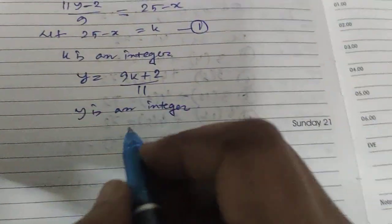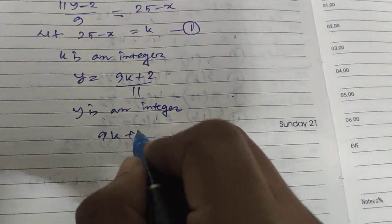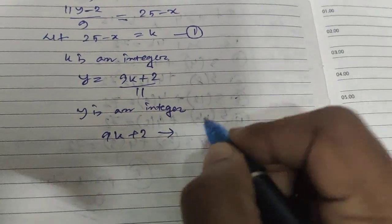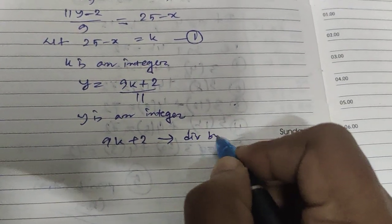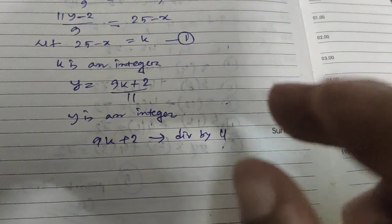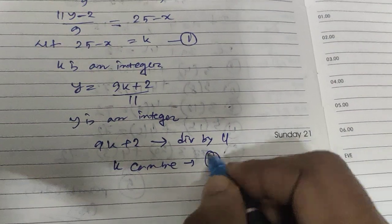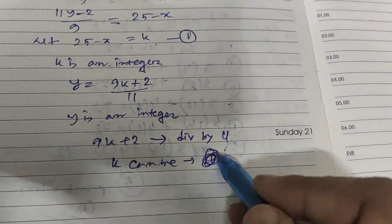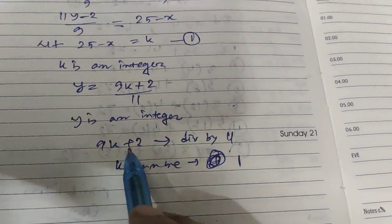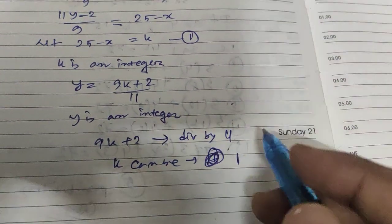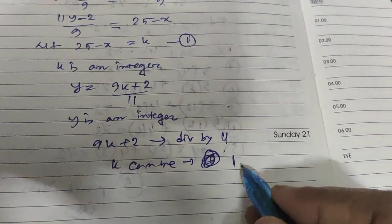So for that reason 9K plus 2 must be divisible by 11. So when is it possible? K can be first of all 1. So when it will be 1, then 9 plus 2 is 11, 11 can be divisible by 11.